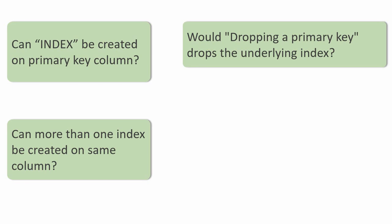The first question is: can we create an index on top of a primary key constraint column? The second question is: can more than one index be created on the same column? The first and second questions are very similar to each other. The last question is: by dropping a primary key, will it drop the underlying index automatically?